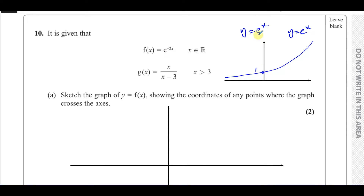Any of these types of graphs — 2 to the power of x, 10 to the power of x, 3 to the power of x, even a half to the power of x — will go through (0, 1), because when x is 0, you have something to the power of 0, which is 1. So that's the main function.